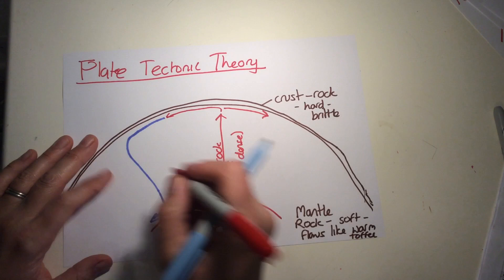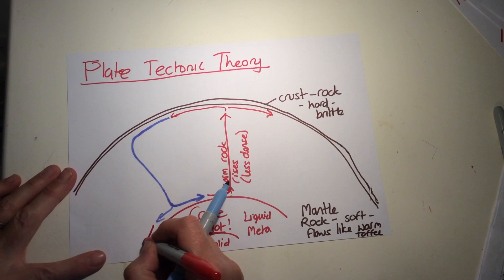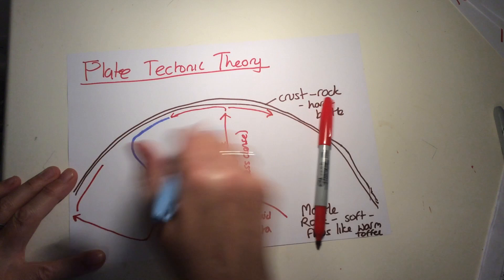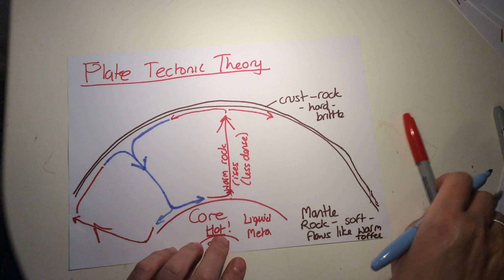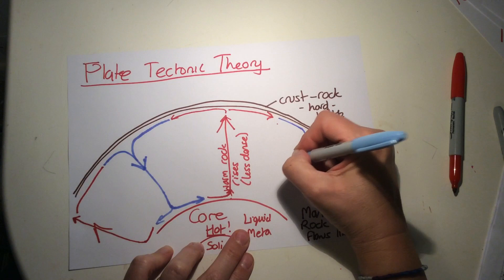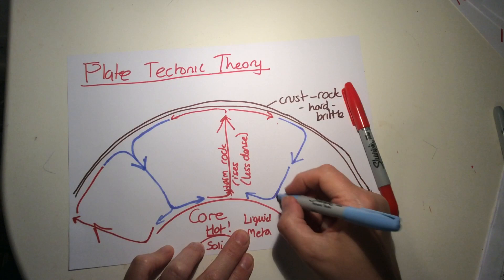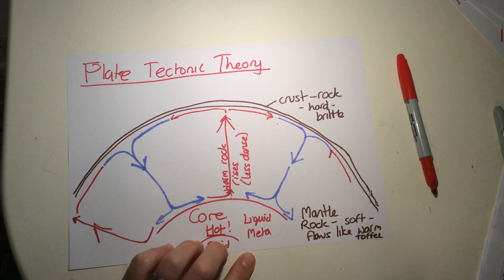As it cools, it contracts, becomes more dense, and then it moves back down towards the core where it moves in each direction, heats back up, and starts its journey again. The same thing is happening here—moves to the side, heats up enough, rises up, is forced to the side, cools down, comes back down. We end up with areas where rock is rising and areas where cooler rock is falling. This happens all around the world.